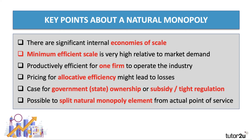Key points: First, with a natural monopoly there are significant internal economies of scale — production favours large-scale enterprises. Second, the minimum efficient scale (MES) will be very high relative to the size of the market, meaning there's essentially only room for one firm. Third, it's more productively efficient for one firm to operate the industry to avoid wasteful duplication of resources. But insisting on allocatively efficient pricing might lead to losses.